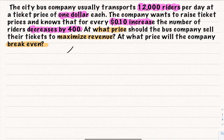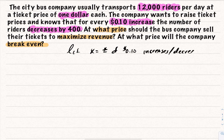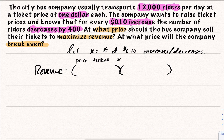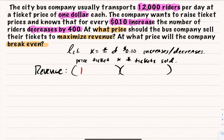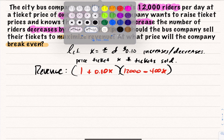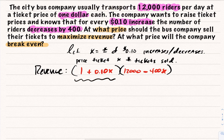Same idea — we need to create a revenue relation. Let X equal the number of 10-cent increases or decreases. Revenue equals price per ticket multiplied by number of tickets sold. The base case: at $1 per ticket, they sell 12,000 tickets. So the price expression is (1 + 0.10X), and the riders expression is (12,000 − 400X) — every time you increase by 10 cents, you lose 400 riders, illustrating the relationship between price and quantity.